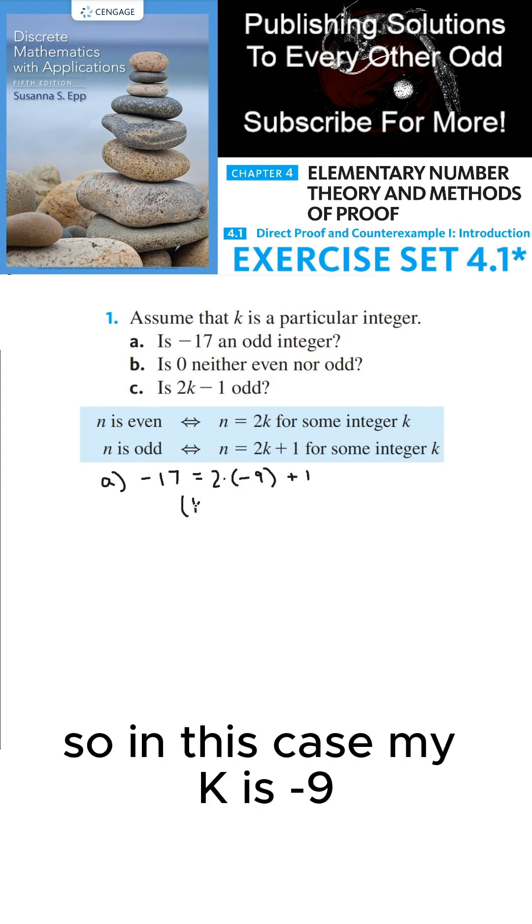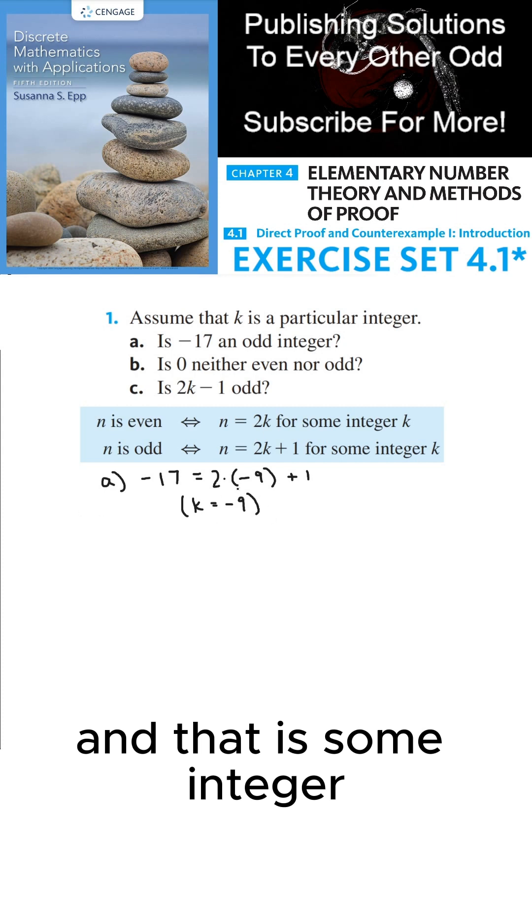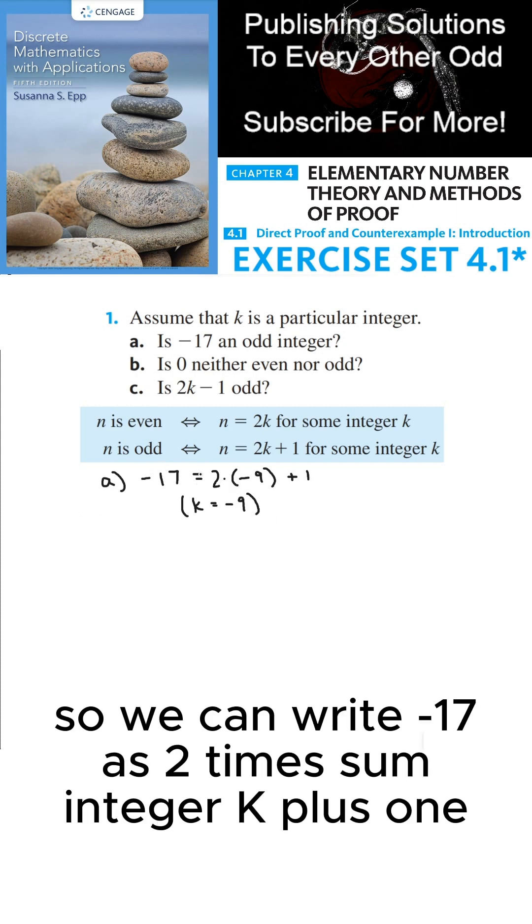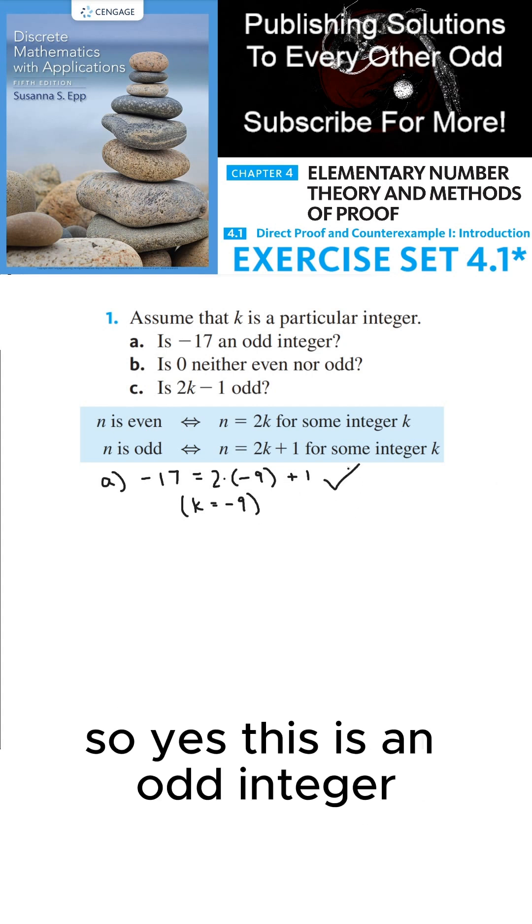So in this case, my k is negative 9, and that is some integer. So we can write negative 17 as 2 times some integer k plus 1. So yes, this is an odd integer.